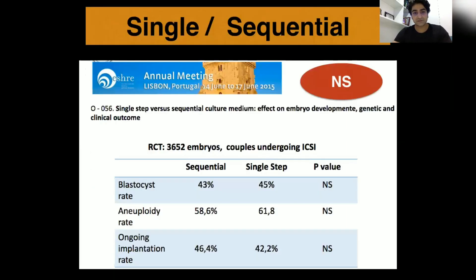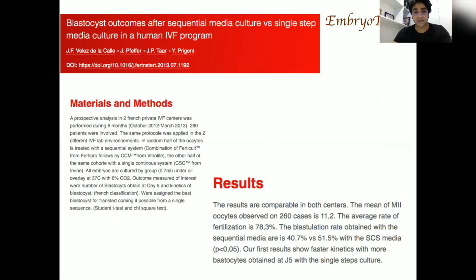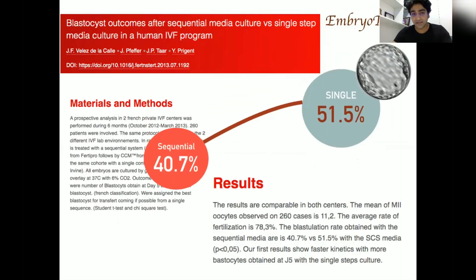Starting with the first slide: a table presented at ASHRAE 2015 clearly shows no significant difference in the blastocyst rate, aneuploidy rate, or ongoing pregnancy rate between single step and sequential media. However, a study published in 2013 in Fertility & Sterility involving 260 cases found a higher blastocyst rate with single step media — 51.5% compared to 40.7% with sequential.